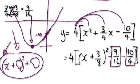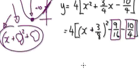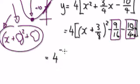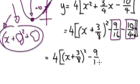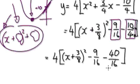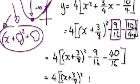Let's try and merge these two constant terms together, because they're both single numbers. To get the two denominators the same, let's times top and bottom of 10 over 4 by 4. So we will have 4 bracket x plus 3 over 8 squared, minus 9 over 16, minus — 10 times 4 is 40, and 4 times 4 is 16. So now we can merge them: x plus 3 over 8 squared, minus 9 minus 40, that will be minus 49 over 16.